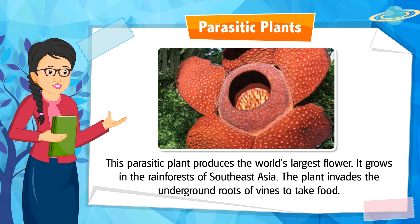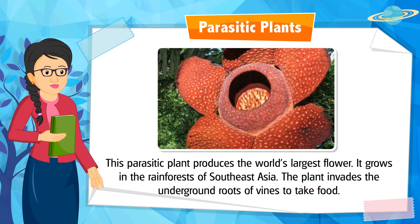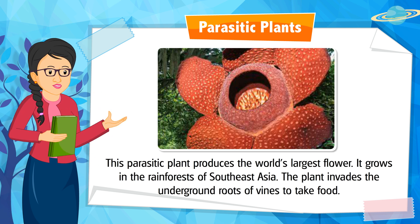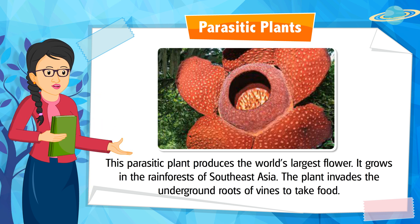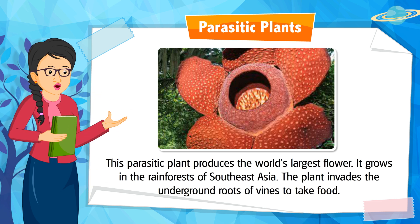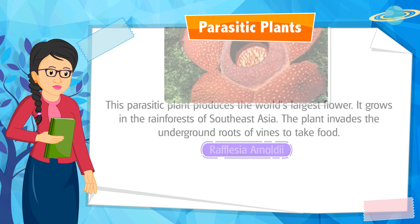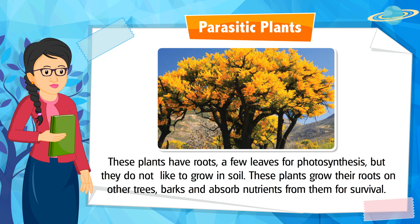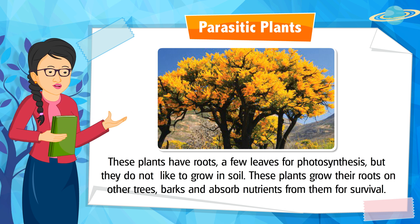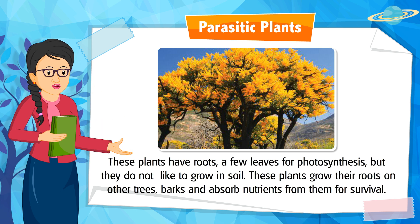This parasitic plant produces the world's largest flower. It grows in the rainforests of Southeast Asia. The plant invades the underground roots of vines to take food. It is Rafflesia arnoldii.